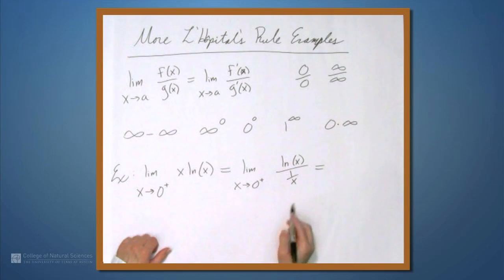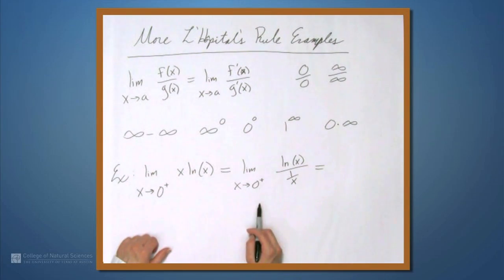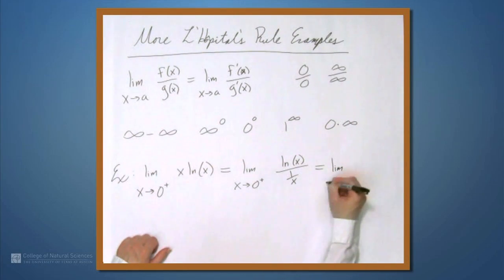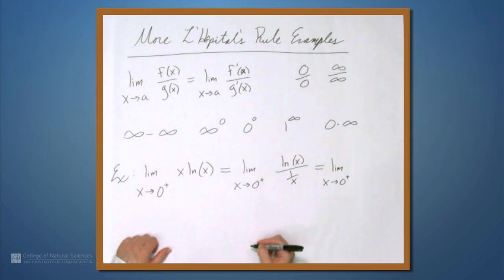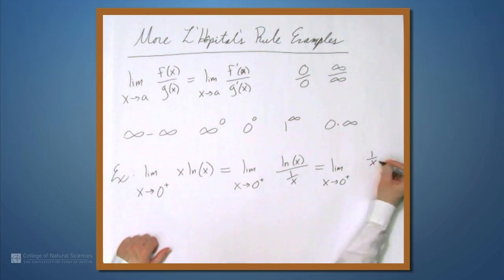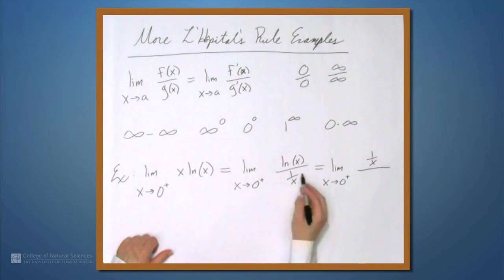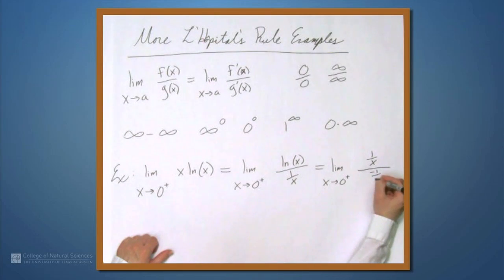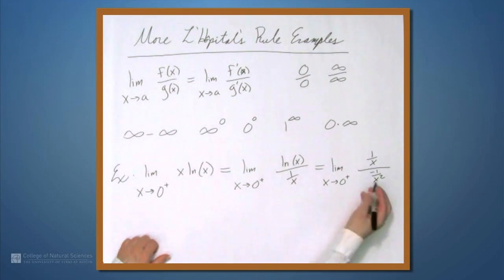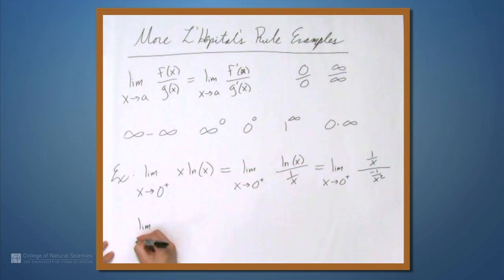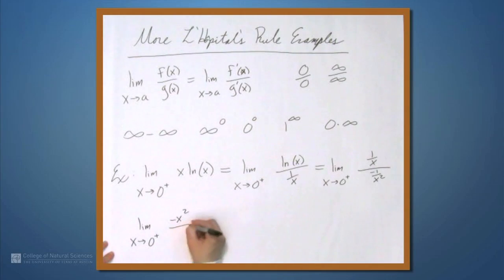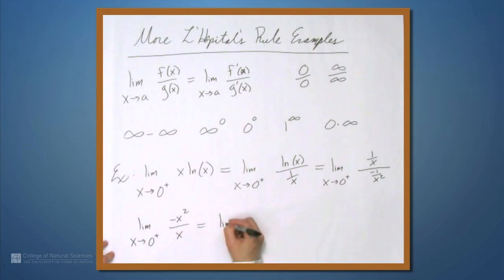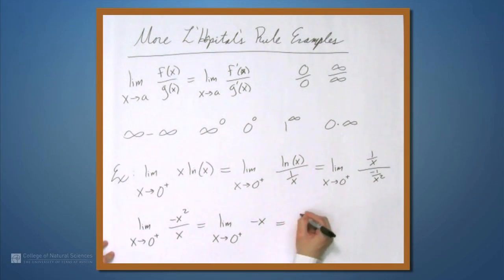Now we have something going to infinity in the top and infinity in the bottom, so we can apply L'Hôpital's rule. We get the limit as x approaches 0 from above of the derivative of ln(x), which is 1 over x, all over the derivative of 1 over x, which is negative 1 over x squared. Using algebra to simplify, we get the limit as x approaches 0 from above of negative x squared over x, which equals the limit of negative x, and that is simply 0.